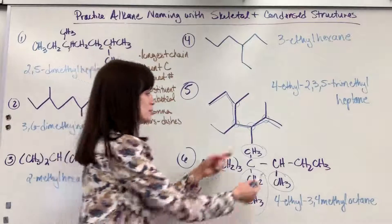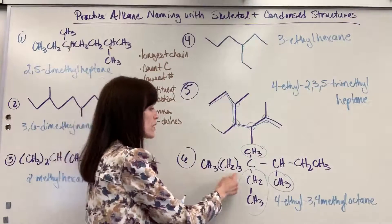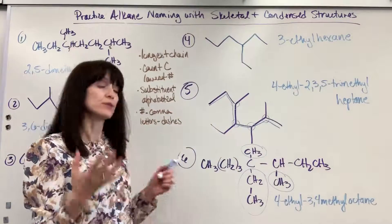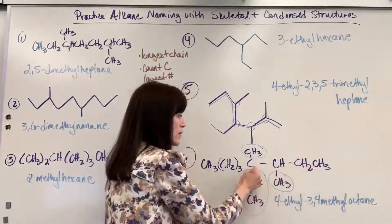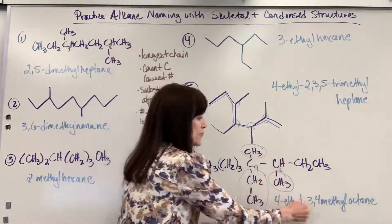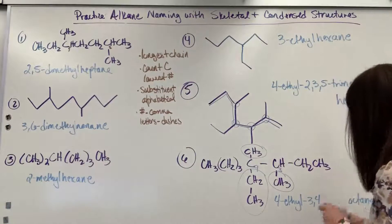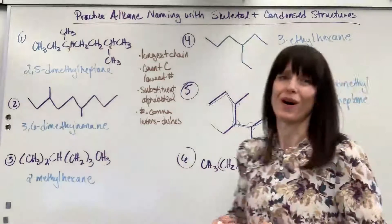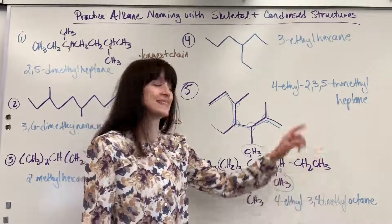We're going to name those. I have two methyl groups and one ethyl group. For the ethyl group, counting: we could go one, two, three, four, five, six — or one, two, three, four. The three and four will be smaller. Since I have two different types of substituents we write them alphabetically. So we're going to have four-ethyl — there's my four carbon, there's my three carbon. It's a dimethyl because we've got two methyl groups, at positions three and four. And my longest parent chain — octane: eight carbons, all single bonded. So: four-ethyl-three,four-dimethyloctane. Nice.